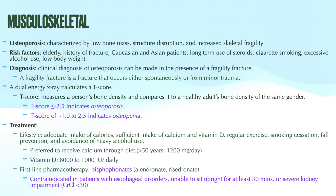A clinical diagnosis of osteoporosis can be made in the presence of a fragility fracture, which particularly occurs at the spine, hip, wrist, humerus, rib, or pelvis — the most commonly reported sites. A fragility fracture is defined as a fracture that occurs either spontaneously or from minor trauma, which is consistent with that scenario of a patient whose injury just doesn't seem to add up to the trauma described.